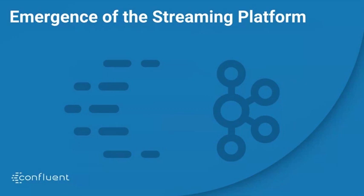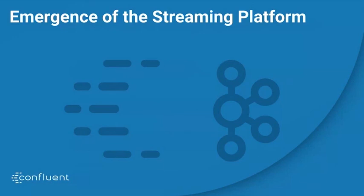What's powering all this is the emergence of what we're calling the streaming platform — this is what powers the move from batch to real-time. This is the architecture of tech companies and digital companies, and we think it is destined to be a major technology platform in the world. The role of the streaming platform is to sit at the center of a company, interconnect all the microservices, capture streams of events from applications, connect data systems, and do all this in real time and at global scale.